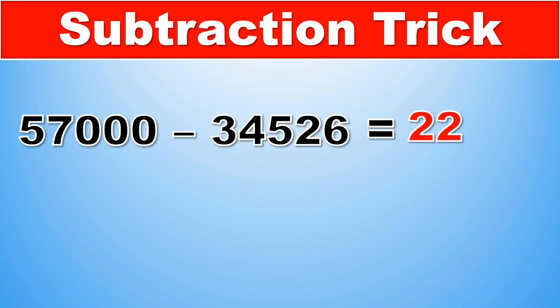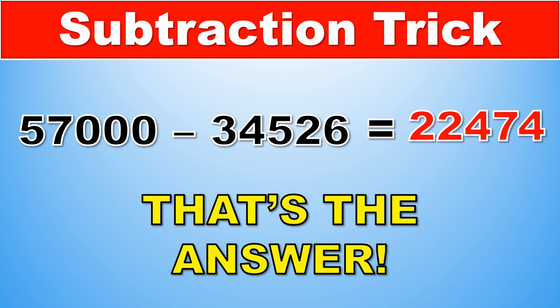Now let's take a look at the other part of this number 526, all from 9 and the last from 10. So doing the same thing that we did with the other numbers, we have 9 minus 5, which is 4, 9 minus 2, which is 7, and 10 minus 6, which is 4. This means that 57,000 minus 34,526 is equal to 22,474. And that is the answer.